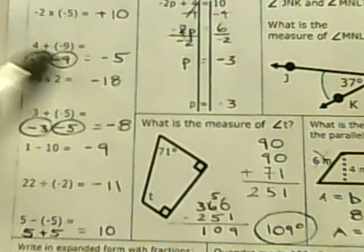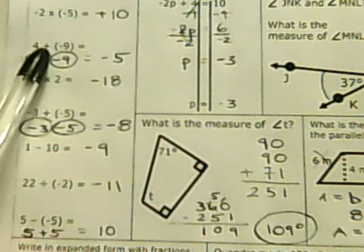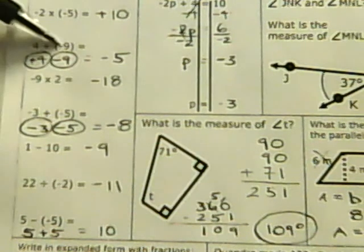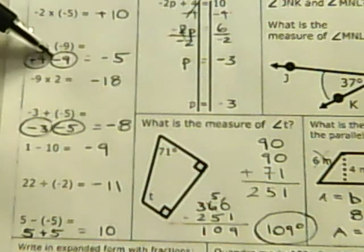With addition or subtraction, the first thing we do is rewrite it. Here we have two signs, a positive and a negative. So it's 4 plus negative 9. A positive and a negative reduce to a negative.